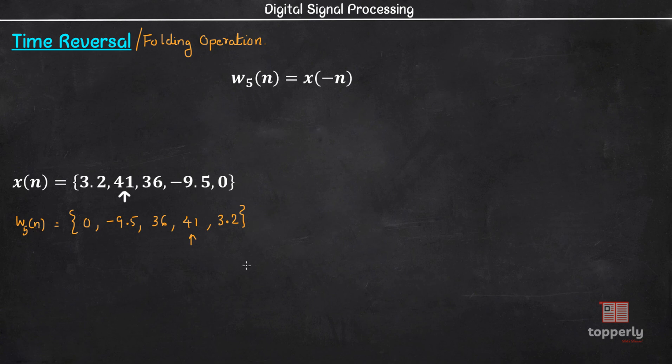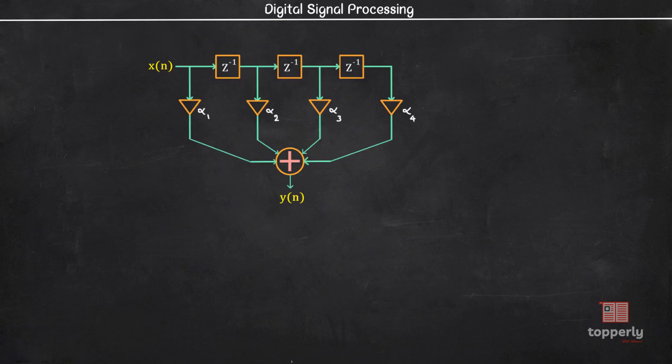So far we learnt the 5 basic operations and how they are schematically represented. However, in most applications, rather than having a single operation, the combinations of these basic operations are used. Let us see one such example. This block diagram shows a discrete time system obtained by the combination of basic operations. We will analyse this diagram to determine the value of y of n.